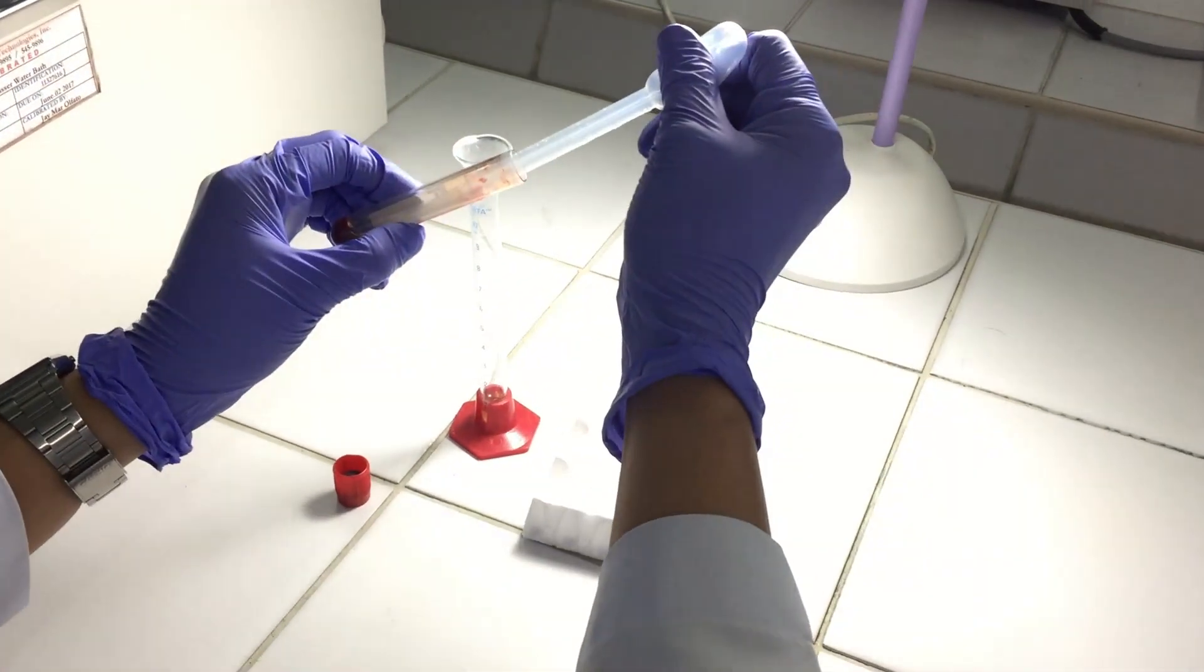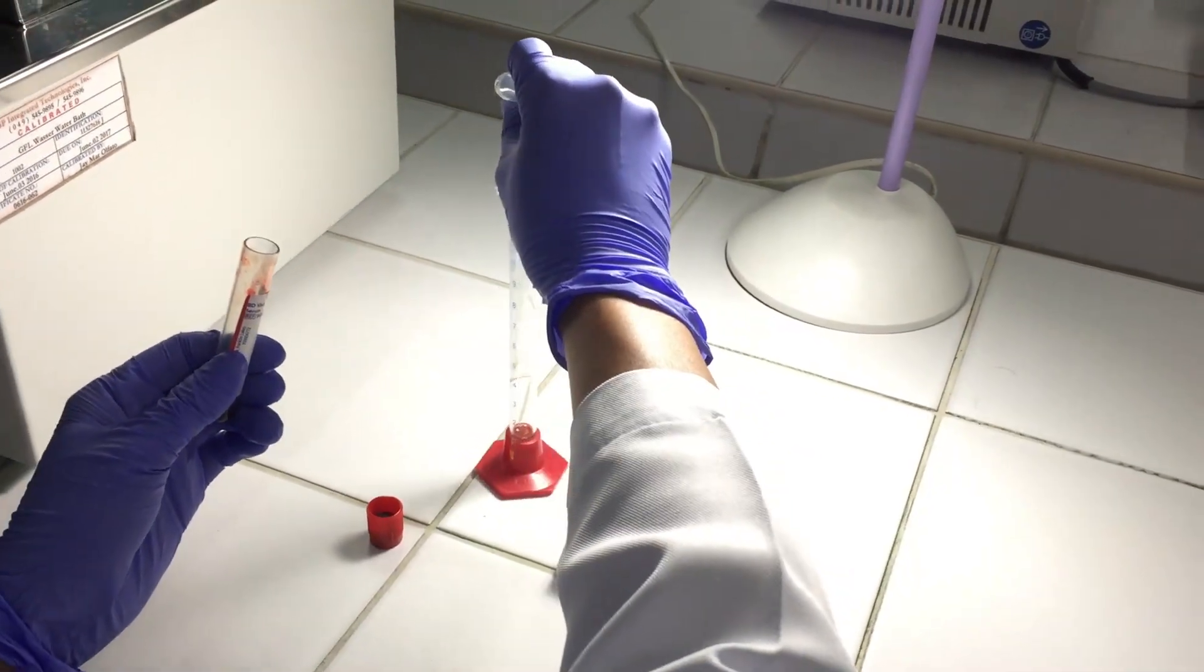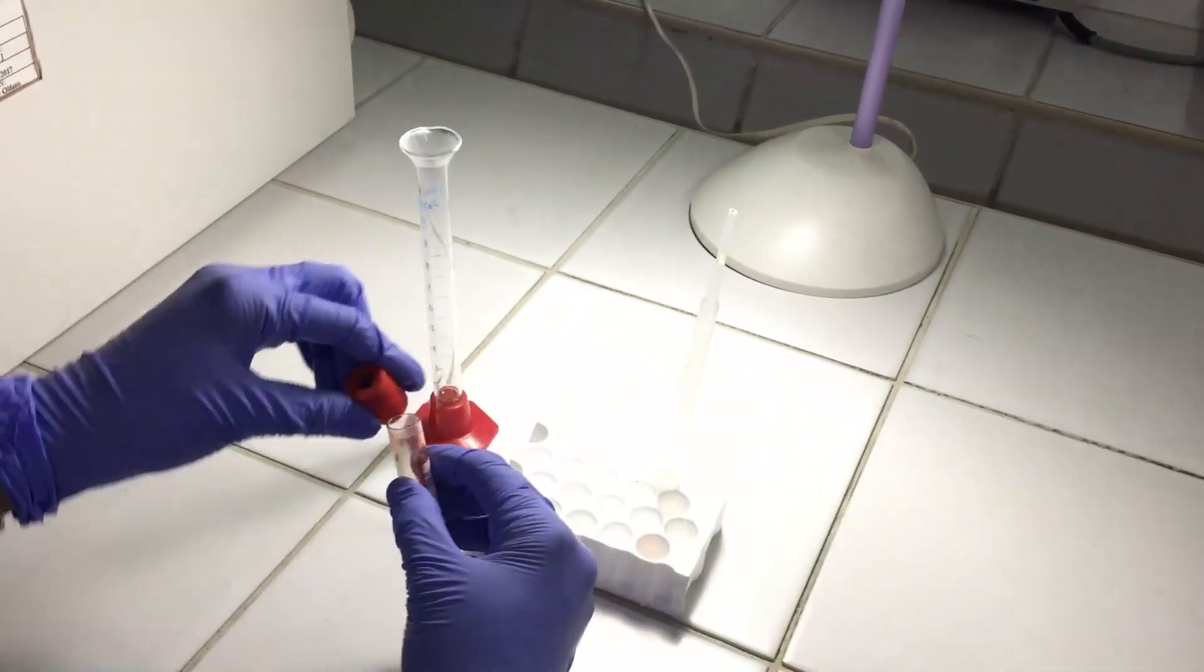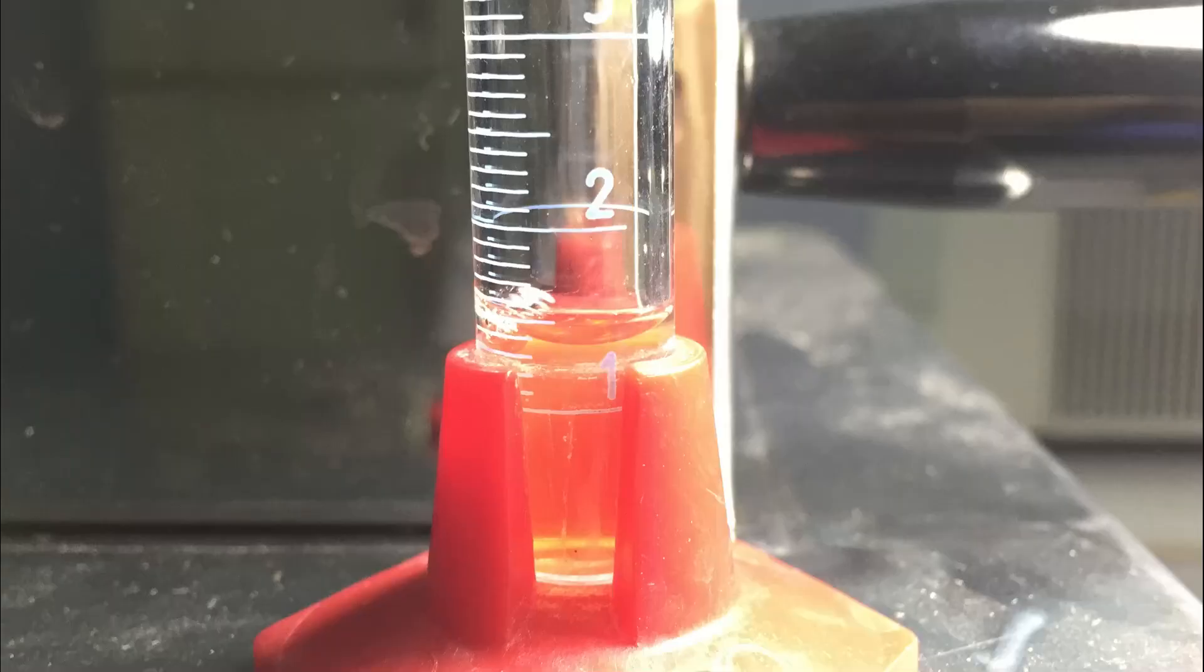Compute using the formula percent serum is equal to the volume of serum divided by the volume of whole blood multiplied by 100.